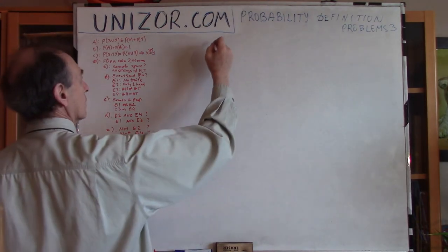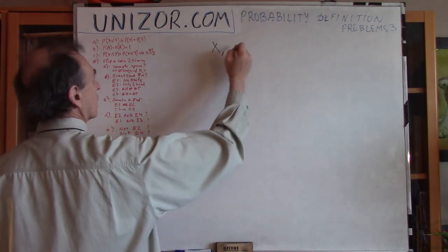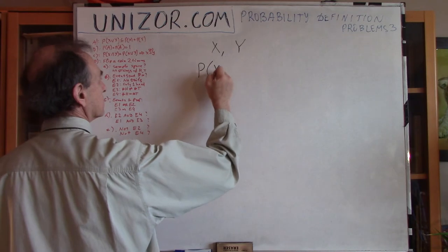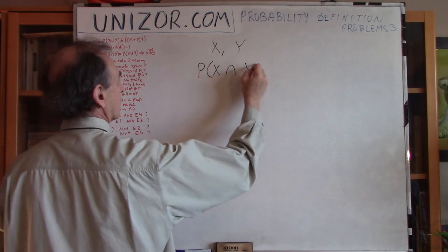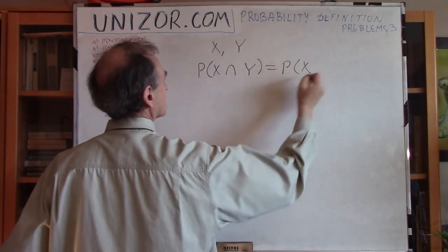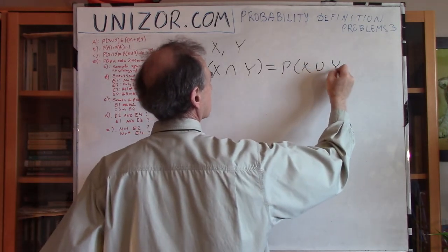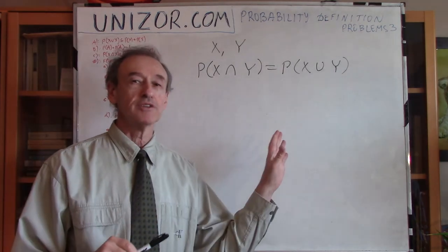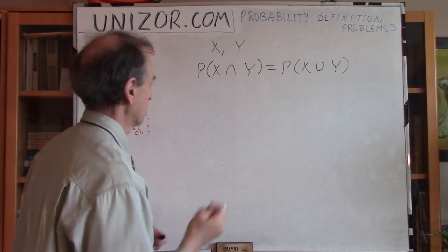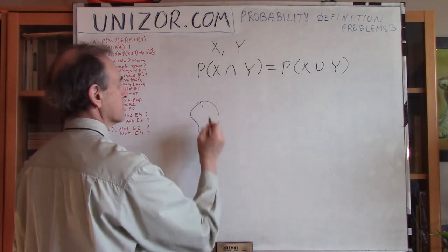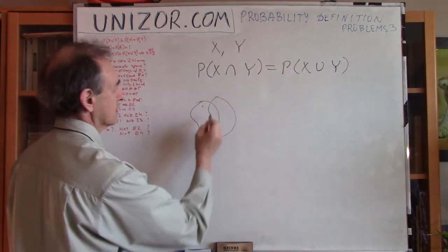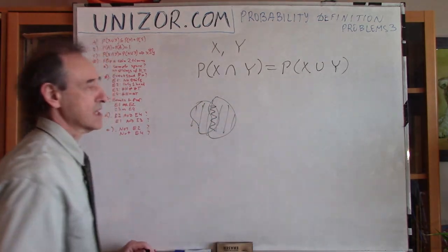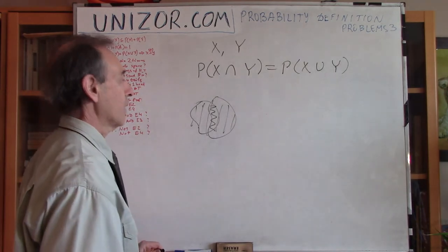Now another one: X and Y are two events. What's known is that the probability of their intersection is equal to the probability of their union. That's kind of an unusual formula. If you have a picture — this is event X and this is event Y, this is their intersection, and this is their union — I'm saying that the measure of these are the same.